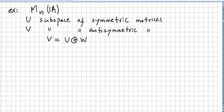This time we are taking the vector space of n-squared matrices over the field of the reals. We are going to pick subspaces U and W, where U is the subspace of symmetric matrices and W is the subspace of anti-symmetric matrices, and we are going to show that V is equal to the direct sum of U and W.